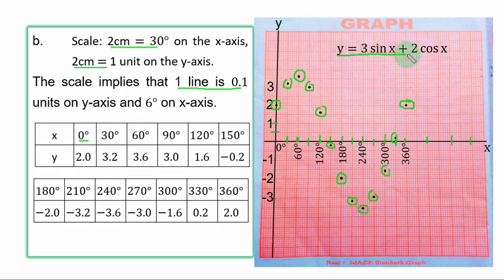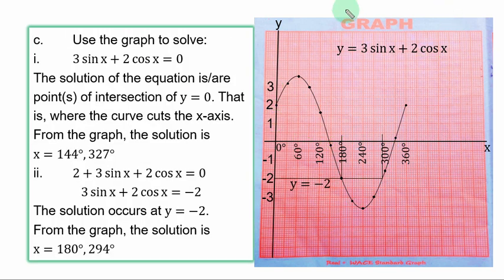So don't forget the title of the graph. It is simply the relation that you are plotting. Next is to join the points together using a flexible broomstick or a very accurate freehand drawing. The points have been joined together. So we move to part c.